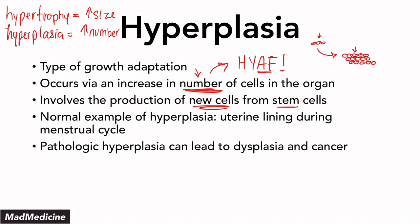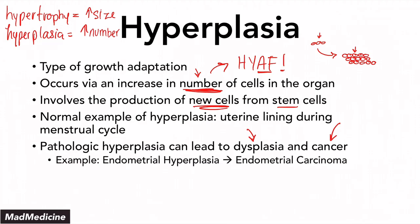Pathologic hyperplasia can also happen, and when it does, it can often lead to dysplasia, and from dysplasia it can lead to cancer. One example of this would be endometrial hyperplasia. In the endometrium, the normal thickness is already determined, but when it undergoes pathologic hyperplasia, you have a high likelihood and high risk of it developing into endometrial carcinoma.